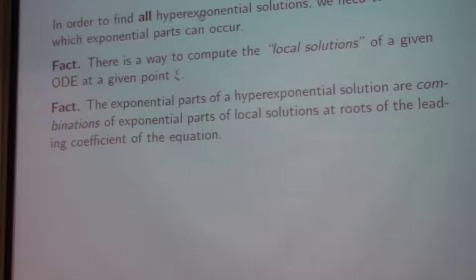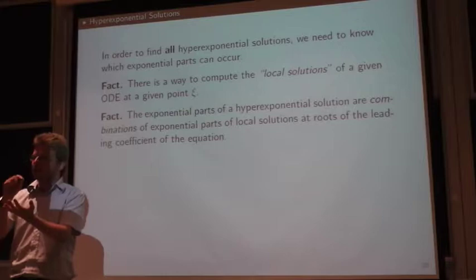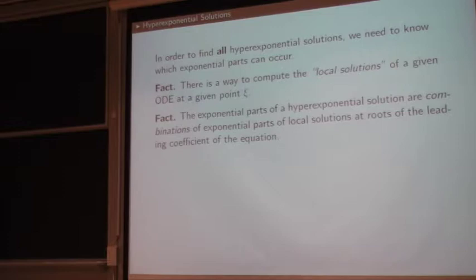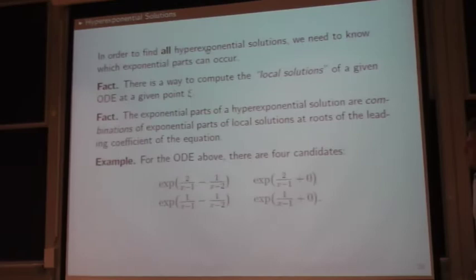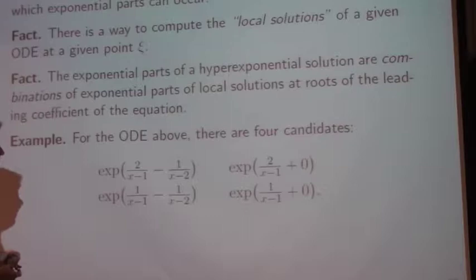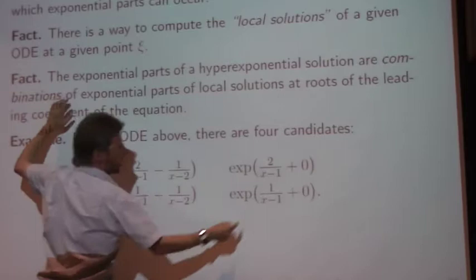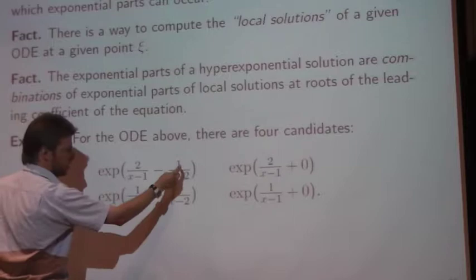Okay, so here's the other fact. If you look at the exponential parts of a hyperexponential solution, then these exponential parts can always be written as a combination of the exponential parts that you see here in these series expansions. I'll show you on the next example what that means. So here we have, for the ODE example, we have four candidates. This, this, this, and this. And it's obtained by taking the two exponential parts that we got from expanding at one. These are those two, they appear here and here. And combine them with the two exponential parts that we got from expanding at two, which are those two and those two.